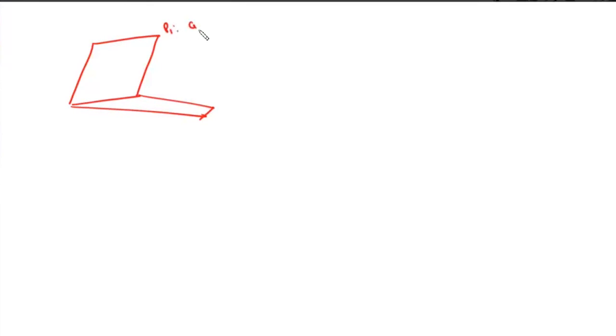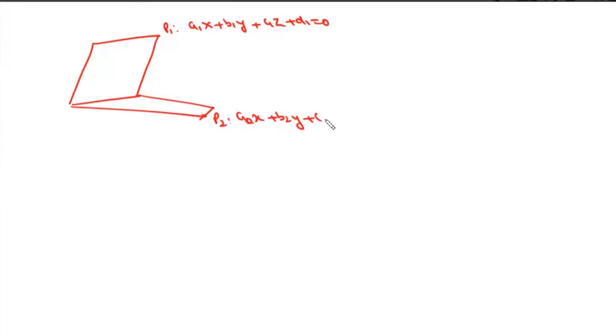Now we will come to the angle between two planes. Suppose we are given two planes: p1 which is a1x + b1y + c1z + d1 = 0, and another plane p2 which is a2x + b2y + c2z + d2 = 0. We need to find the angle between these two planes.